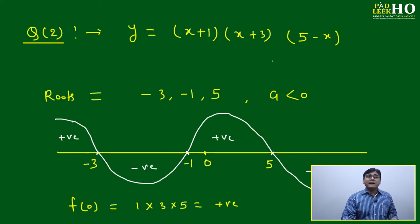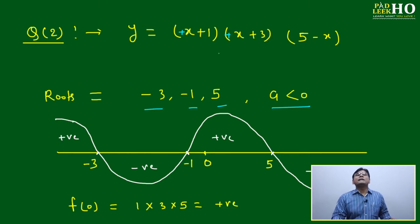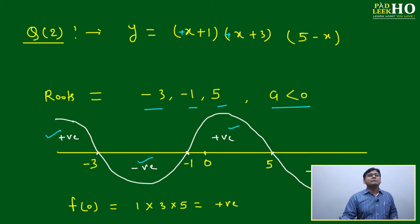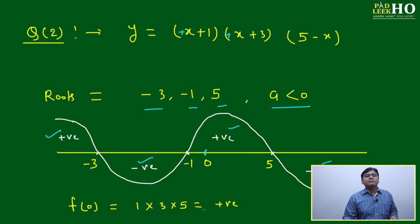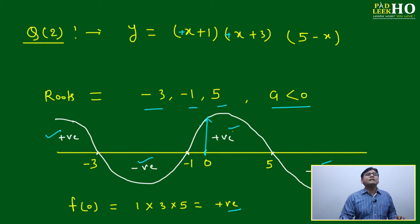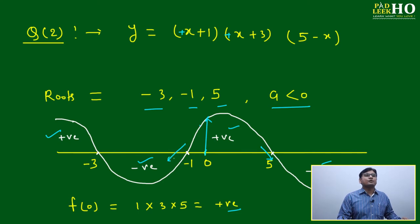Take another example: y = (x + 1)(x + 3)(5 - x). The roots are -3, -1, and 5. Here a is negative, because multiplying the leading coefficients: (+1)(+1)(-1) = -1, so a < 0. This means we start from the positive side: positive, negative, positive, negative. We can verify using the origin: f(0) = (1)(3)(5) = 15, which is positive. Since 0 lies between -1 and 5, the function is positive in that interval, confirming our analysis.